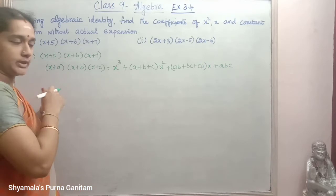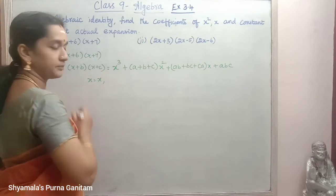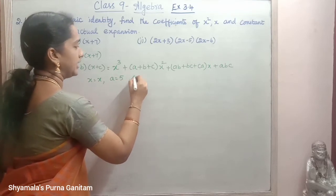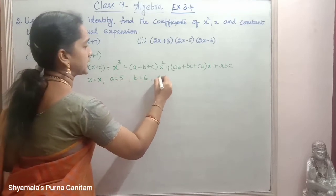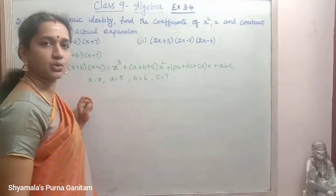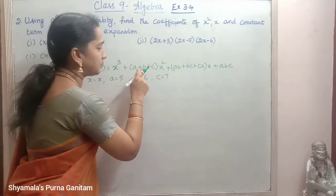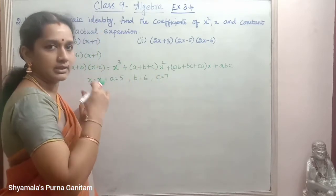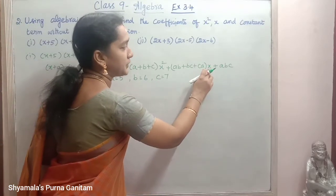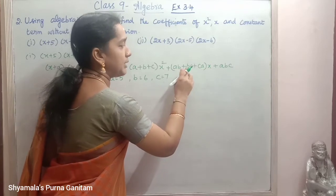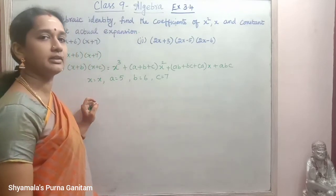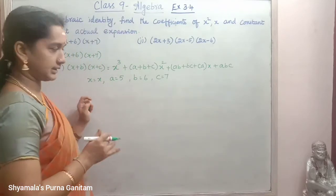In the given question, a is equal to 5, b is equal to 6, and c is equal to 7. The coefficient of x squared is a+b+c. The coefficient of x is ab+bc+ca. And the constant term is abc. So if we do that we will get the answer.